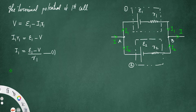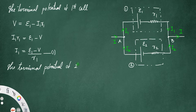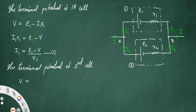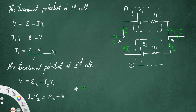For the terminal potential of the second cell, we take V itself, because both cells are connected between A and B, so the potential remains the same — for a parallel connection the potential always remains the same. So V = E2 − I2·R2, which gives I2 = (E2 − V) / R2. Let us call this Equation 2.